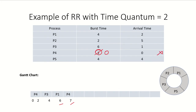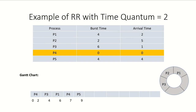P5 is now at the head of the ready queue and is given the processor. P4 is out of the system and P5 starts running for two time units, from seven to nine. After P5 completes its two time units, P3 is at the head of the queue and P5 joins the ready queue.